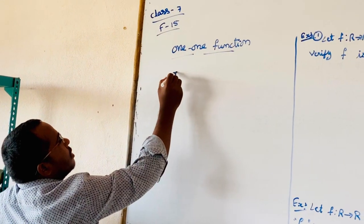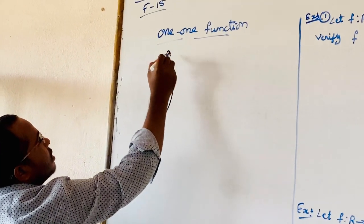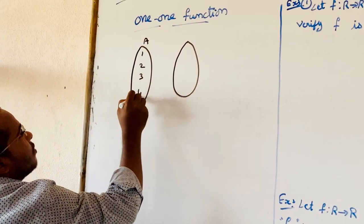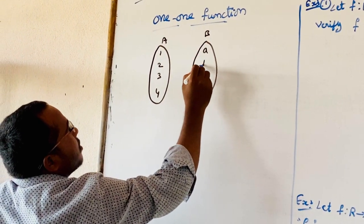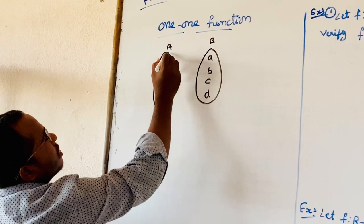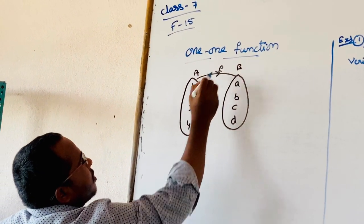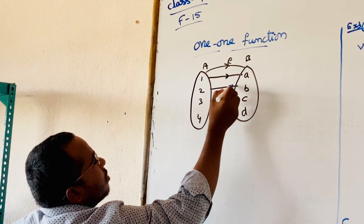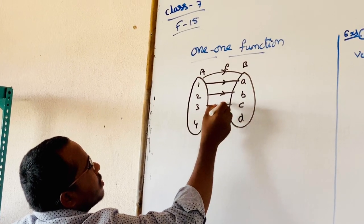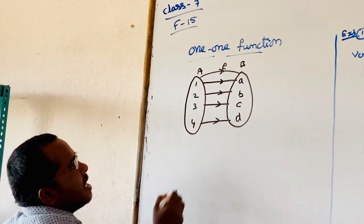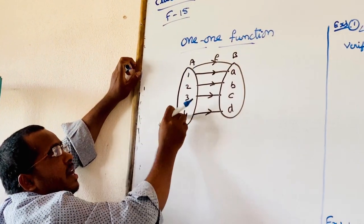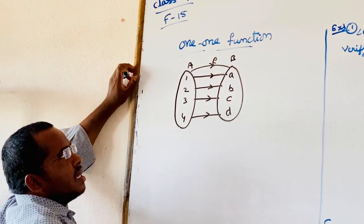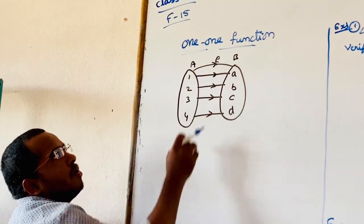For example, set A has elements 1, 2, 3, 4 and set B has elements a, b, c, d. So 1 is related to a, 2 is related to b, 3 is related to c, and 4 is related to d. Here, different elements of set A are related to different elements of set B. This is an example of a one-one function.